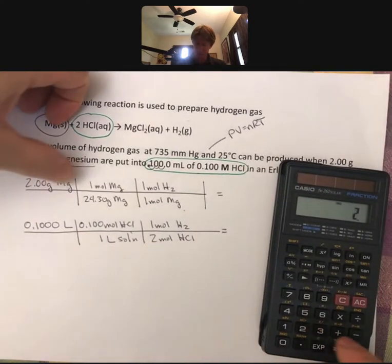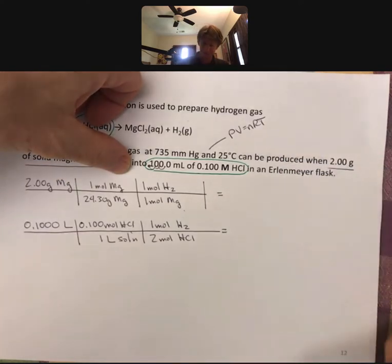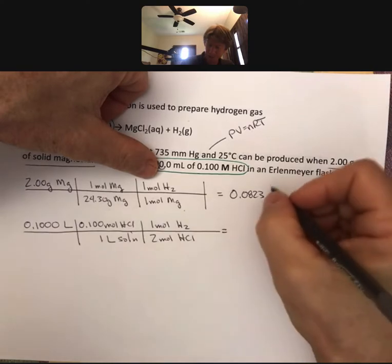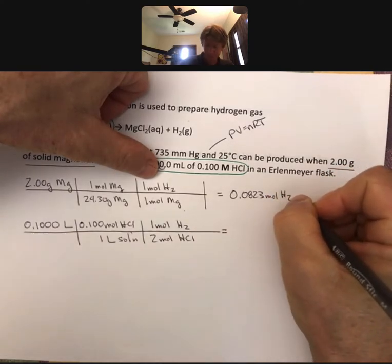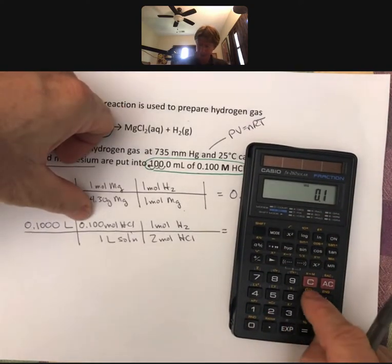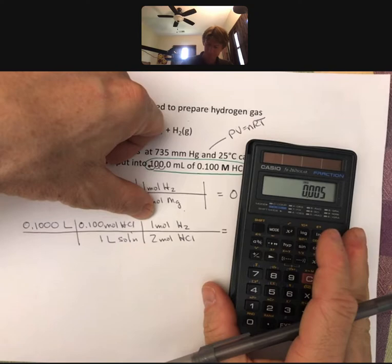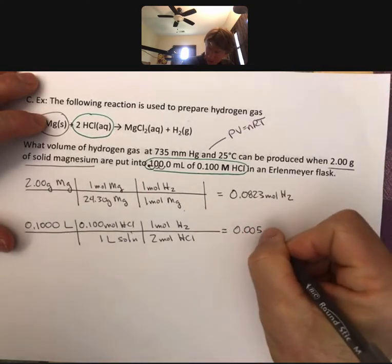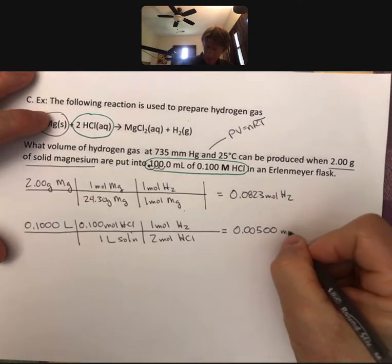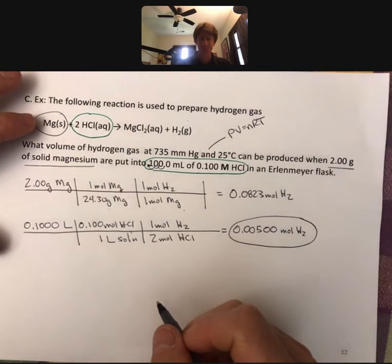Let's do two divided by 24.3. I get 0.0823 moles of hydrogen. And here, 0.1 times 0.1 divided by 2, I get 0.00500 moles of H2. So here is our smaller amount of H2. That's the amount that we can make. So now we know moles of H2, but we've been asked for a volume of H2 hydrogen gas.